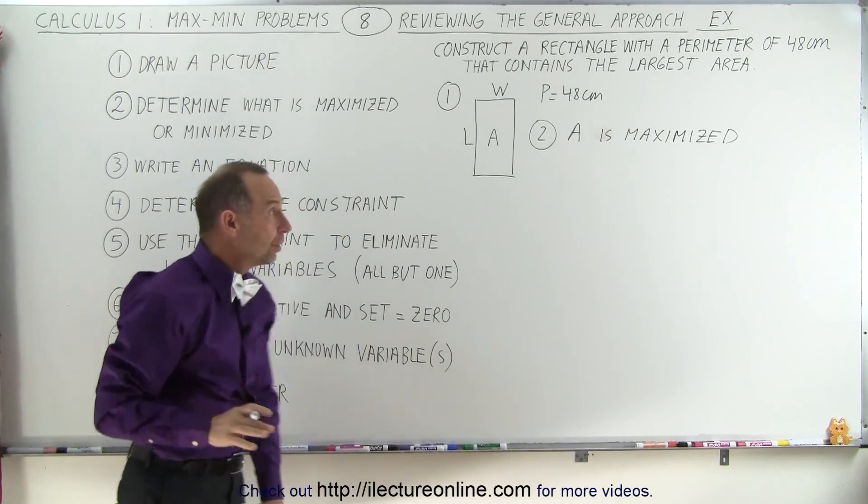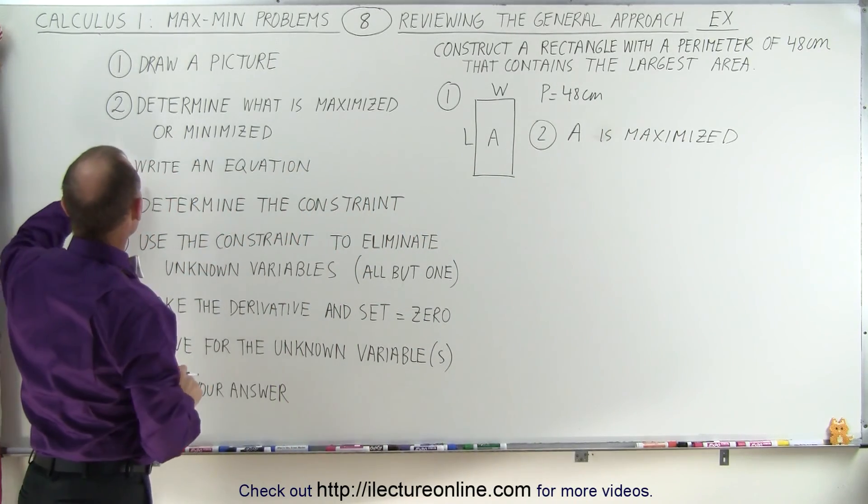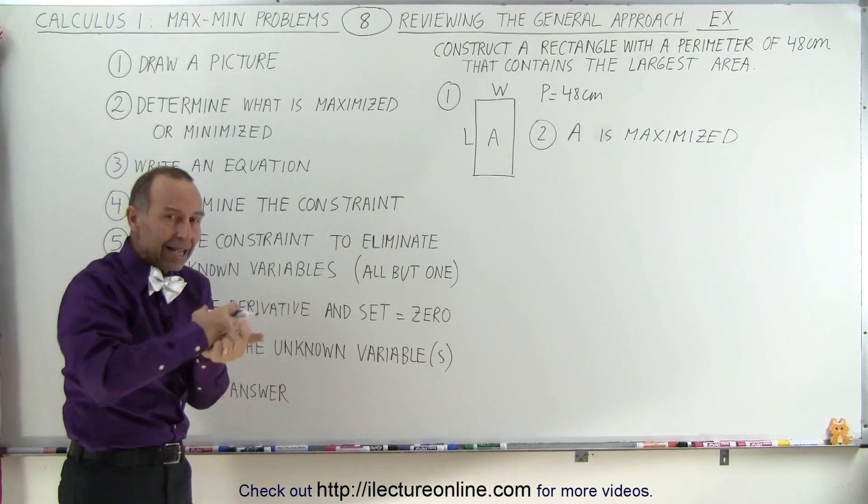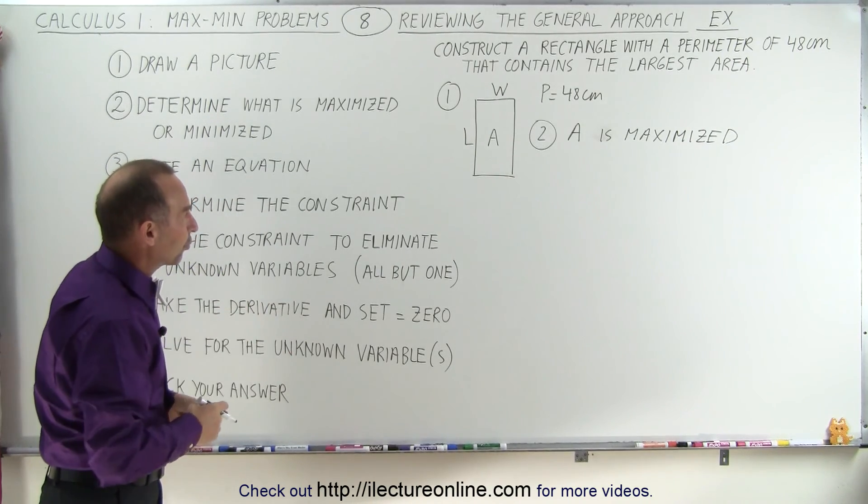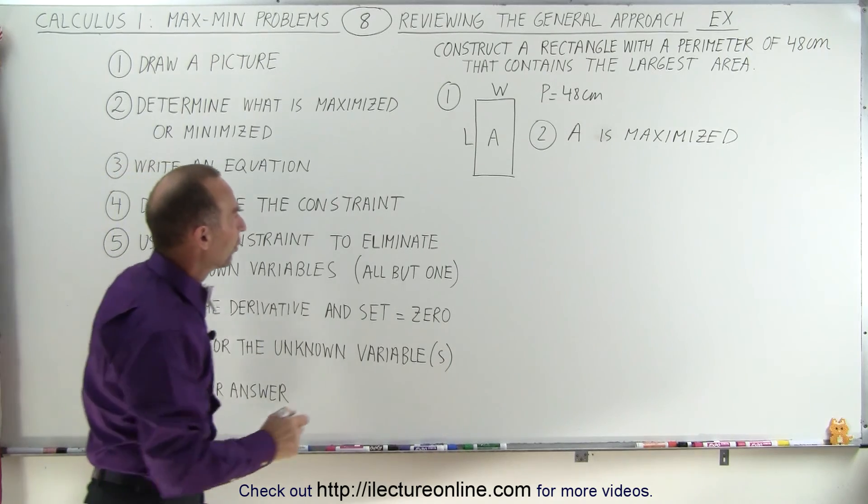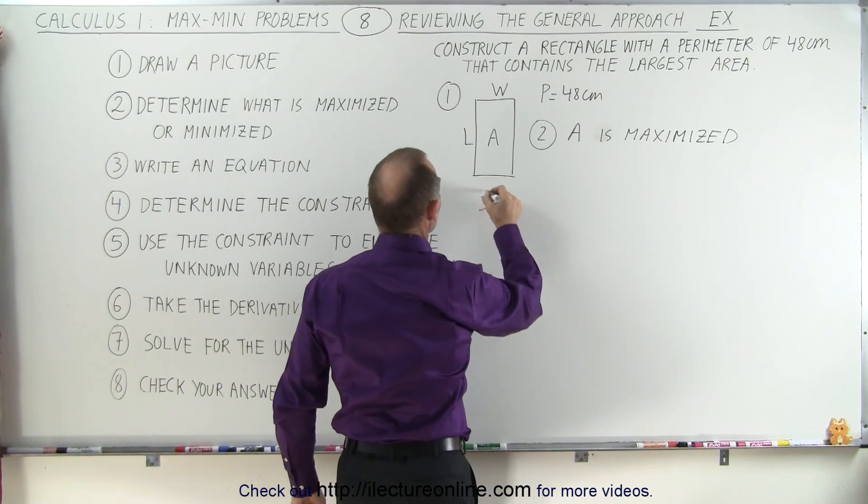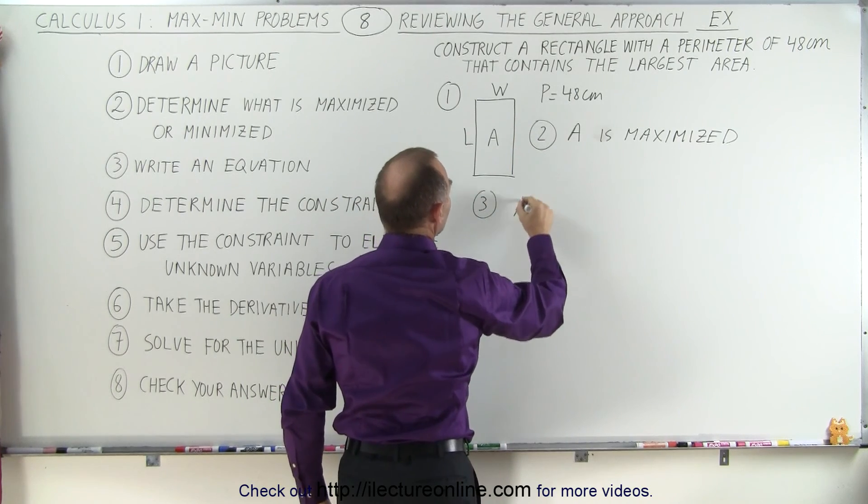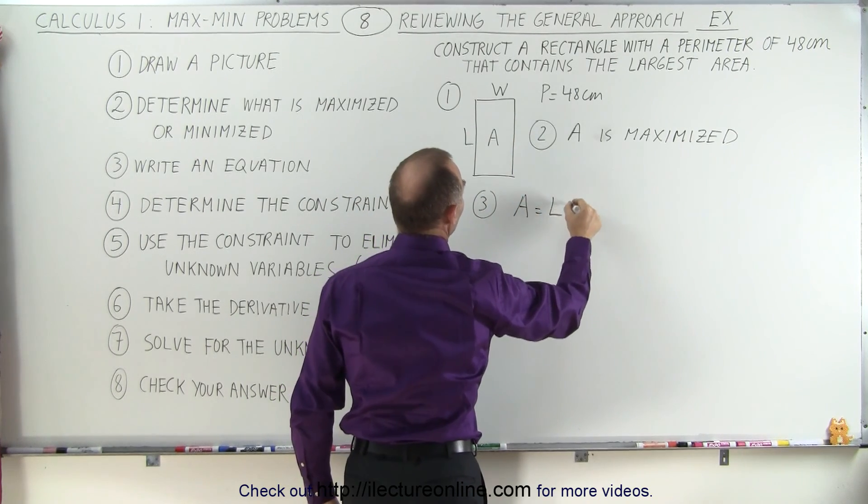Once we determine that the area here is maximized, now we need to write an equation that tells us that the area equals some function of the other variables. So in this case, since we know that the area is equal to the length times the width of a rectangle, we can write area equals length times width.